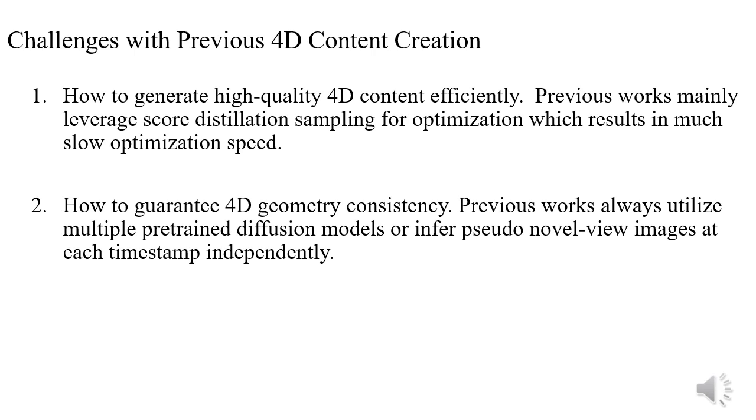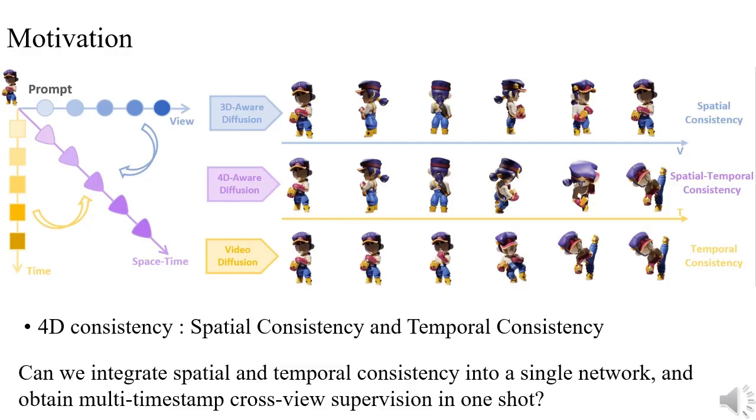Also, previous works always utilize multiple pre-trained diffusion models or infer pseudo-novel-view images at each timestamp independently. This leads to 4D geometry inconsistencies. The 4D geometry consistency can be decomposed into two components: spatial consistency and temporal consistency. These two components have been thoroughly explored separately in static multi-view 3D synthesis and monocular video generation. This raises the question: